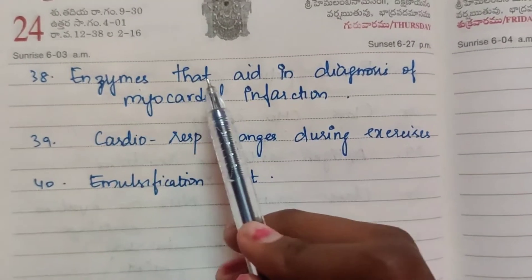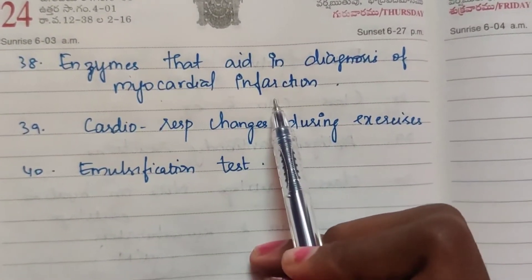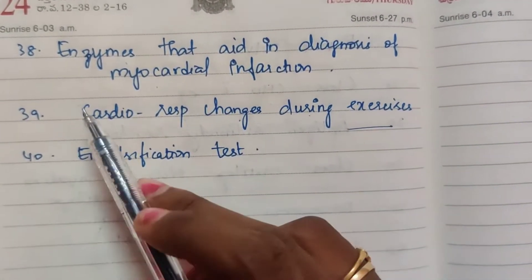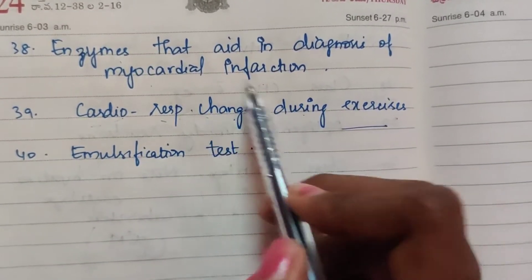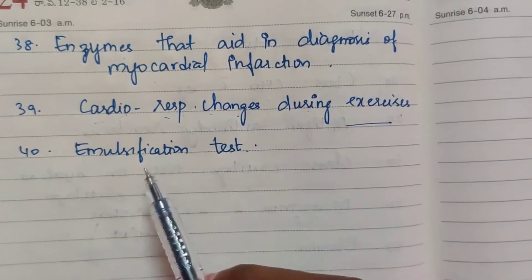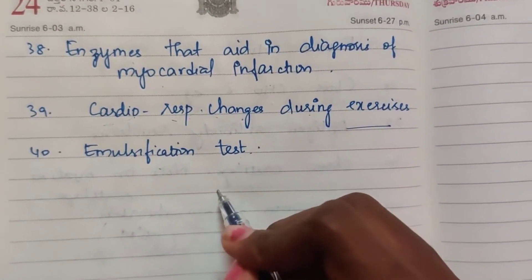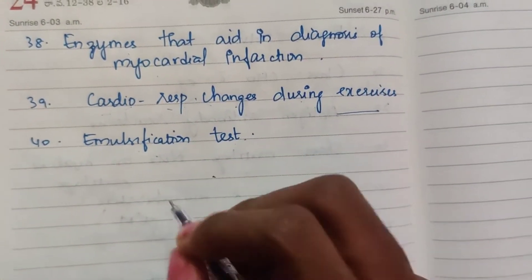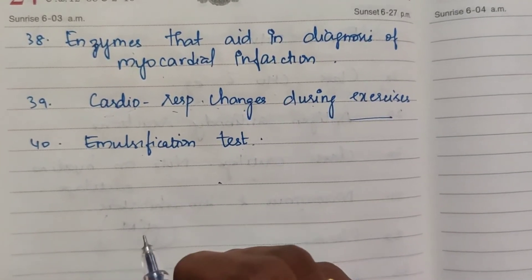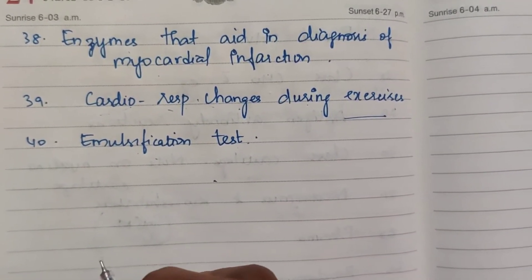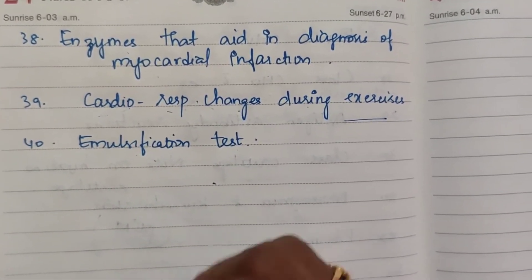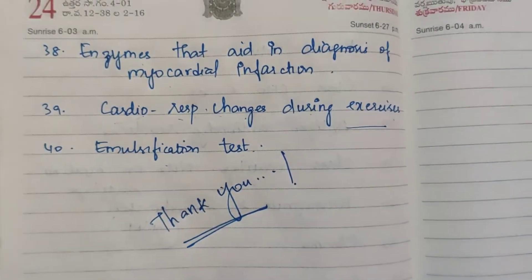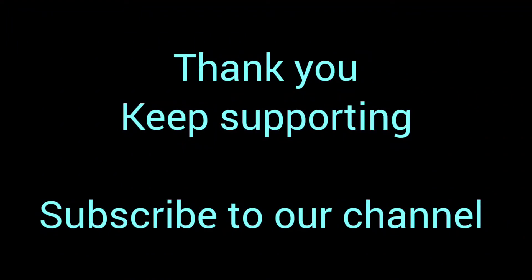Thirty-sixth: origin, insertion, nerve supply, and action of serratus anterior. Thirty-seventh: glandular epithelium. Thirty-eighth: enzymes that aid in diagnosis of myocardial infarction. Thirty-ninth: cardiorespiratory changes during exercise — cardiac system and respiratory changes. Fortieth: emulsification test. Thank you, subscribe to the channel — update in the next video. Thank you.